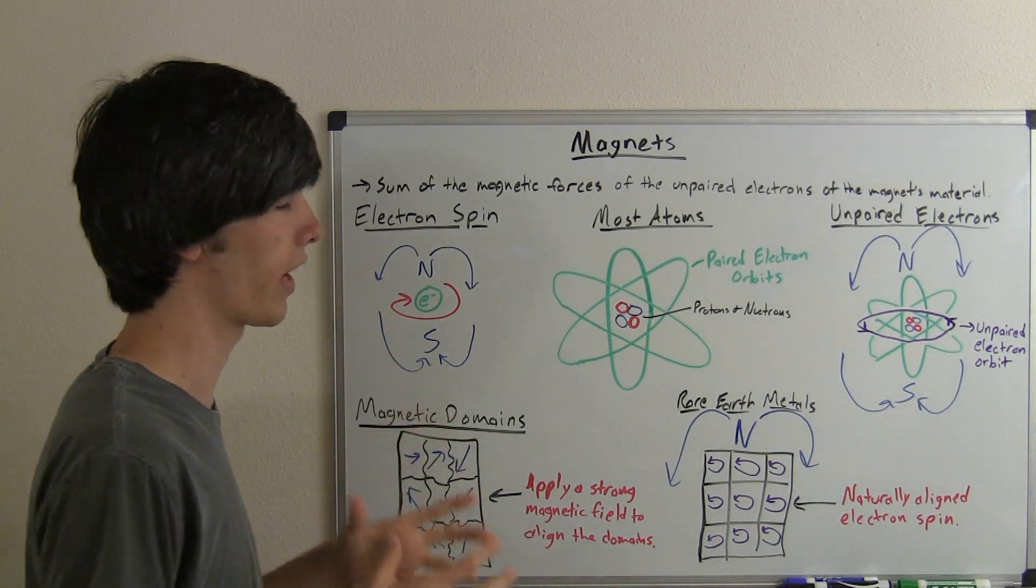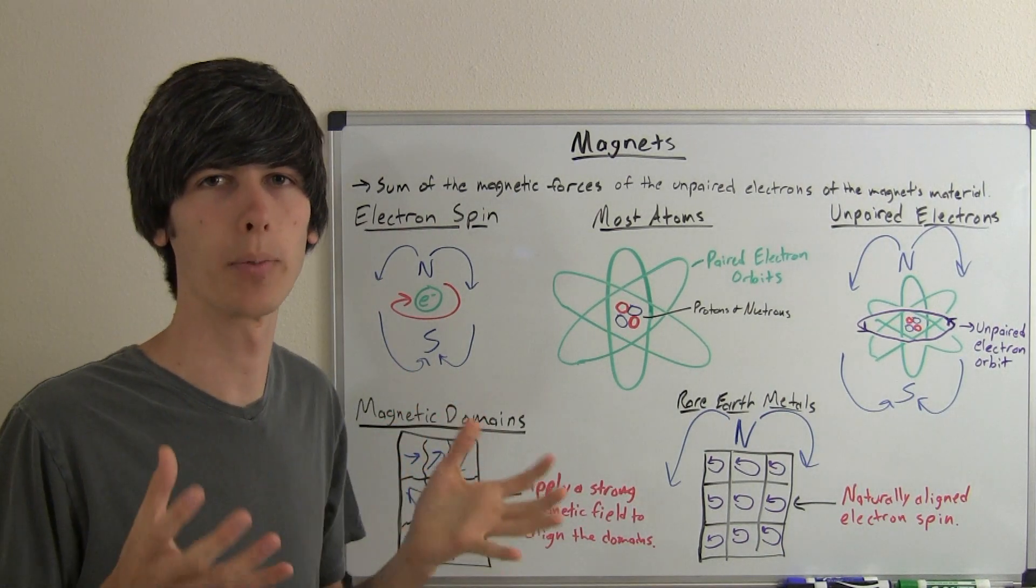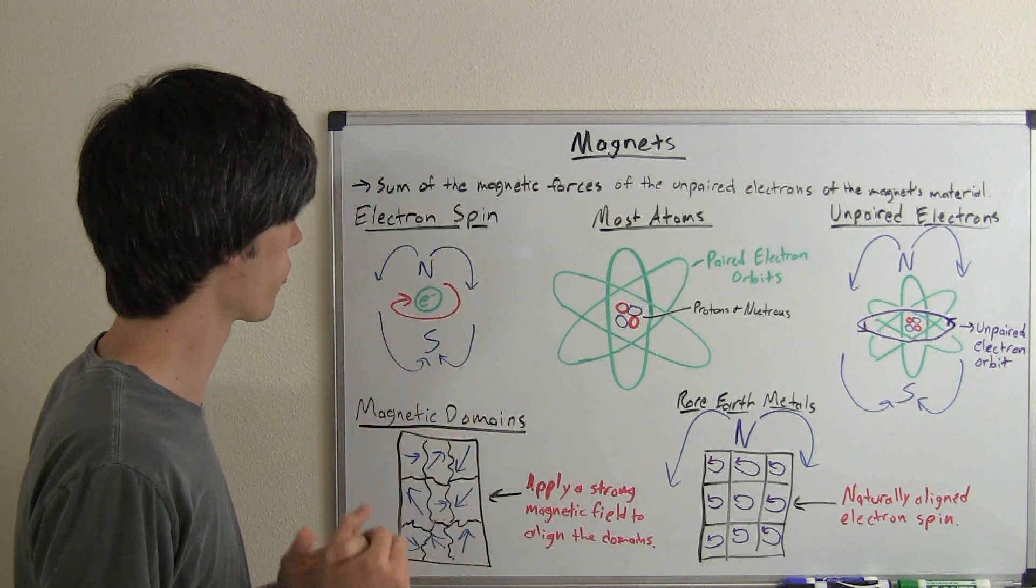Well basically electrons have magnetic fields. Electrons are basically really tiny permanent magnets and so an electron spin determines its magnetic field.